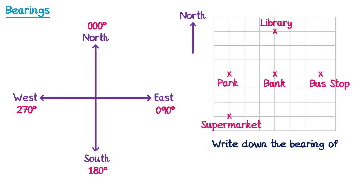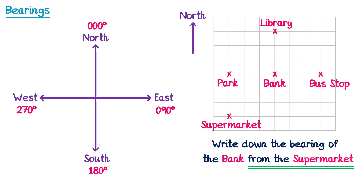Let's do one more. This time we're going to find the bearing of the bank from the supermarket. Since it's from the supermarket, that's where we stand. We face in a north direction and turn clockwise until we face the bank, which is only a small turn this time. For this bearing we haven't even turned through one quarter of a turn — we've turned through half of a quarter turn. Since a quarter of a turn was 90 degrees, this angle will be 45 degrees, so the bearing is 045.